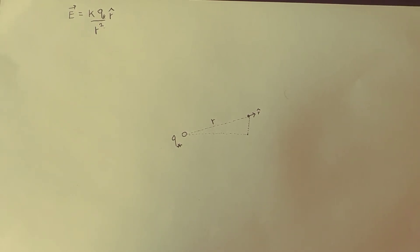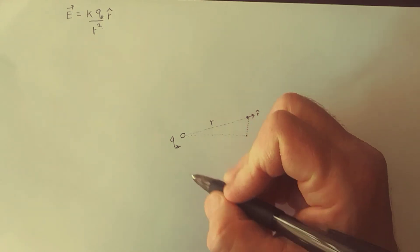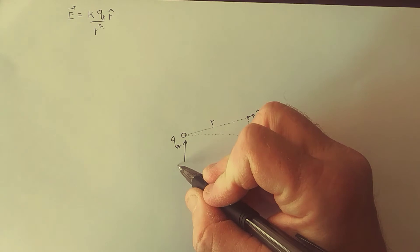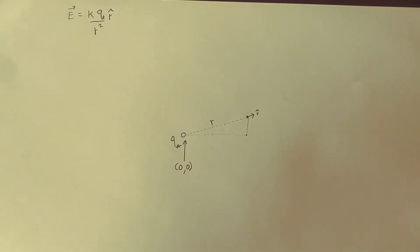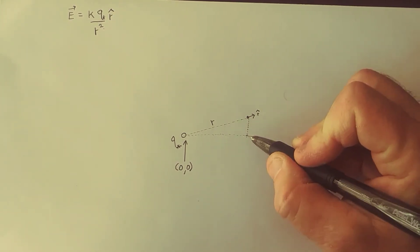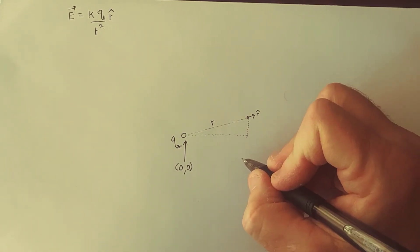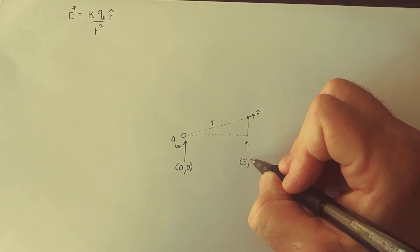Let's be a little more specific and assume that the particle of charge Q star is at the origin. So this point is x equals 0, y equals 0, and let's assume that we want the electric field at this point, x equals 5, y equals 2.